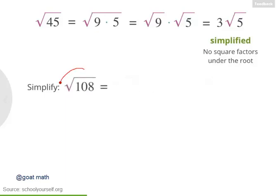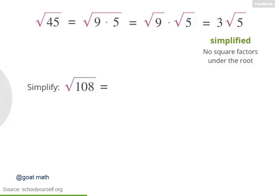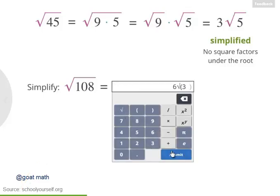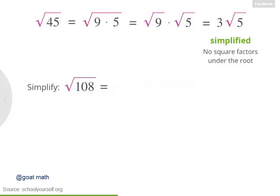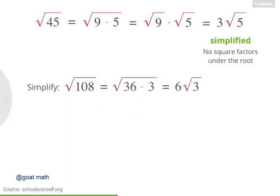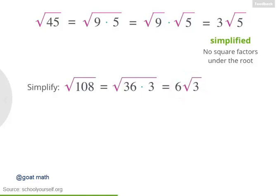Try another example: the square root of 108. Make sure your answer is simplified with no square factors under the root. Very well done — 108 equals 36 times 3, so root 108 equals 6 root 3. The number 3 has no square factors, so 6 root 3 is the simplified way to write the square root of 108.